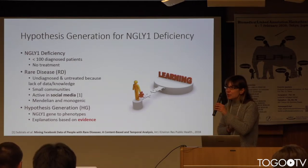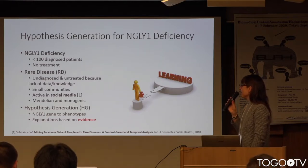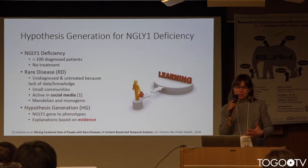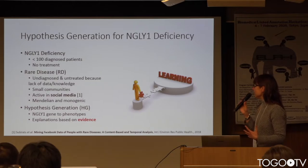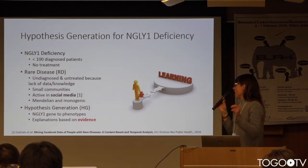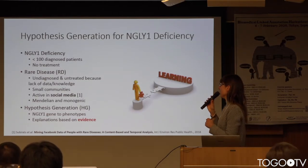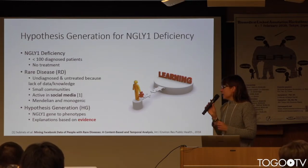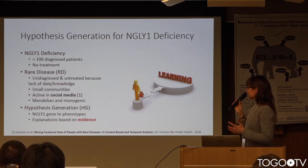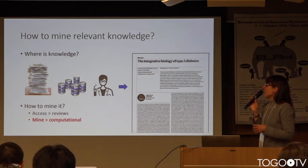We don't know the causes of these rare diseases, but the majority that we do know are genetic and have inherited patterns. To try to gain new knowledge and increase understanding of the pathology of these rare diseases, hypothesis generation is basically about trying to find links between a gene — in our case, an enzyme — a gene that encodes an enzyme called NG1, and phenotypes. Our goal was to support domain experts, biologists, to find explanations based on evidence.